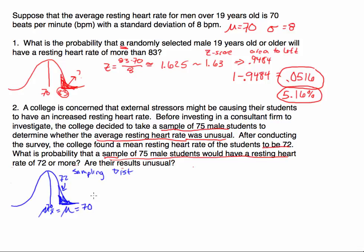Is it weird to have a sample mean of 72 given all the other means? In order to answer this question I need to calculate the z-score — how many standard deviations away is a mean of 72 from the mean of the means? When we talk about a sampling distribution, the standard deviation is not the typical standard deviation of the population — we call that the standard error.